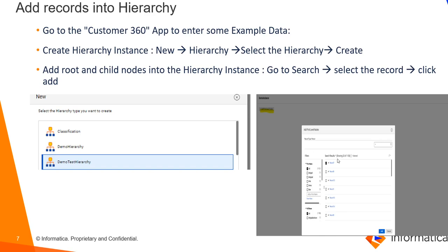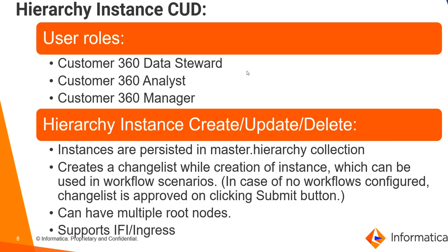Once the hierarchy model is saved, we can add records into the hierarchy from the Customer 360 app. Log into Customer 360 and create a hierarchy instance by simply clicking on New Hierarchy and selecting the hierarchy. Once the instance is created, we can add root and child nodes into this hierarchy instance. To create a hierarchy instance in Customer 360, one would require a data steward, analyst, or manager role. Once the instances are created, they will be persisted in the master.hierarchy collection. A hierarchy can also be configured with a workflow — if a workflow is configured, the changelist will be associated with the creation of an instance.